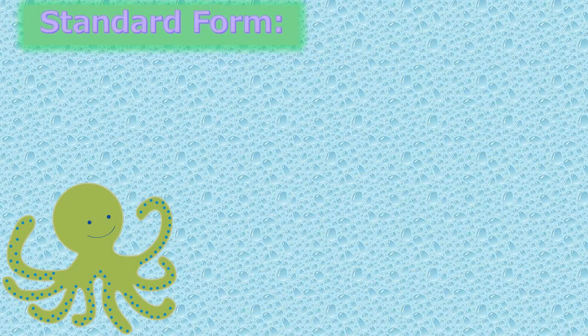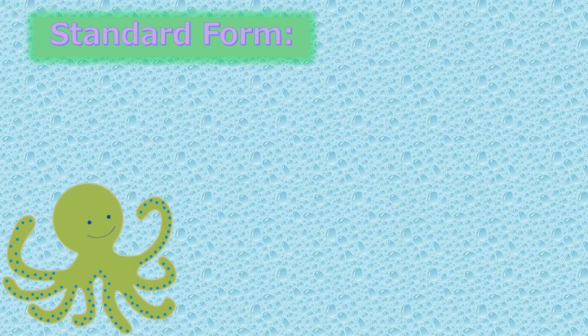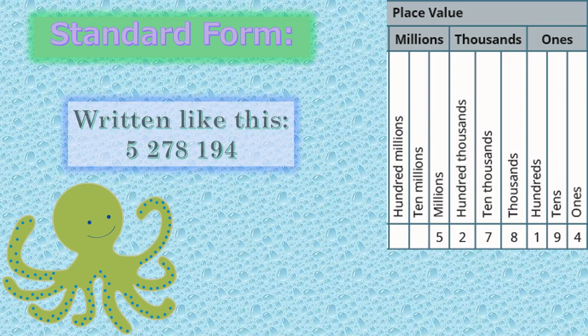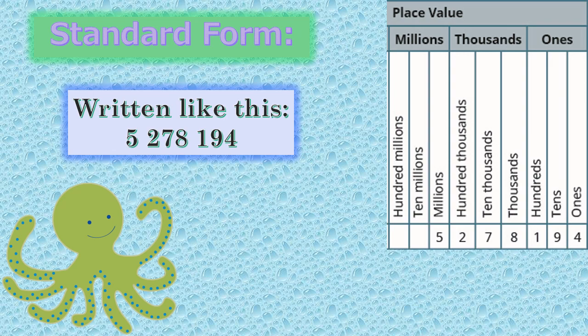Standard form. When writing a number in standard form, you will write the numbers only. Take a look at the chart on your right. Notice the number displayed on the chart — it is already written in standard form. So standard form is written like this: 5,278,194.